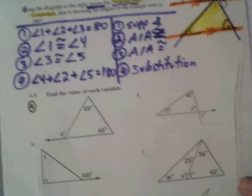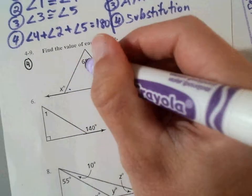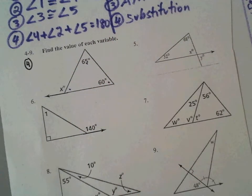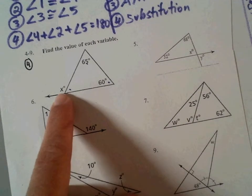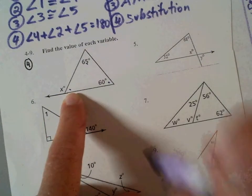So on number four, you're going to use the fact that the interior angles, this one, this one, and this one, all add to 180. We just proved it. So you have to figure out what X is. X is 55, or is this one 55? Yeah, isn't this one 55? Yes.